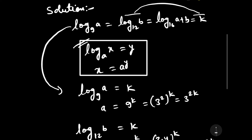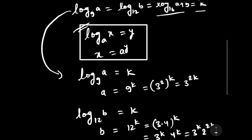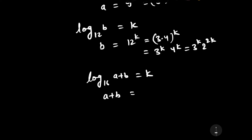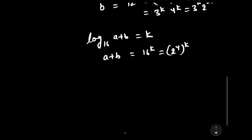Considering the third equality, log 16 base A plus B equals k, we have A plus B equals 16 to the power k, which equals 2 to the power 4 whole to the power k, giving us A plus B equals 2 to the power 4k.